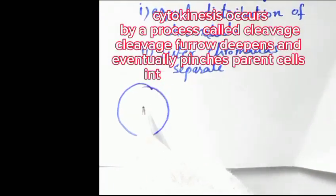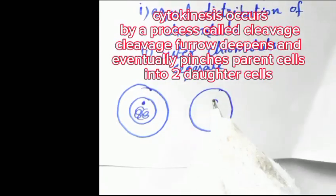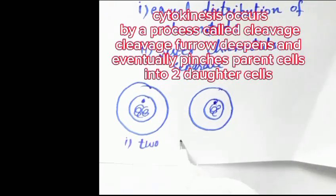Cytokinesis occurs by a process called cleavage. The cleavage furrow deepens and eventually pinches the parent cell into two daughter cells.